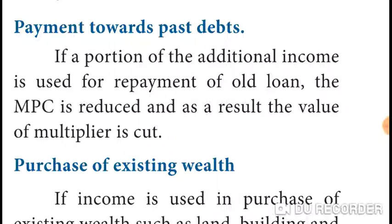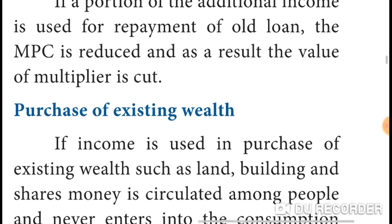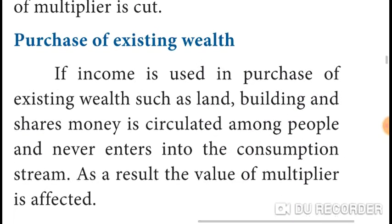Second, purchase of existing wealth. If income is used in the purchase of existing wealth such as land, buildings, and shares, money is circulated among people and never enters the consumption stream.